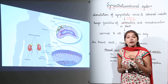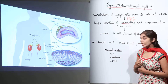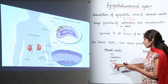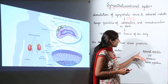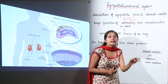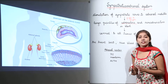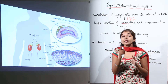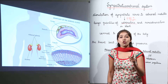ACTH — adrenocorticotrophic hormone — is secreted by the anterior lobe of the pituitary gland, and it regulates the release of hormones from the adrenal cortex. In contrast, the release of hormones from the adrenal medulla is under the control of the sympathetic nerves of the sympathetic nervous system. So the key difference is: adrenal medulla is controlled by sympathetic nerves, while adrenal cortex is controlled by ACTH from the anterior pituitary.